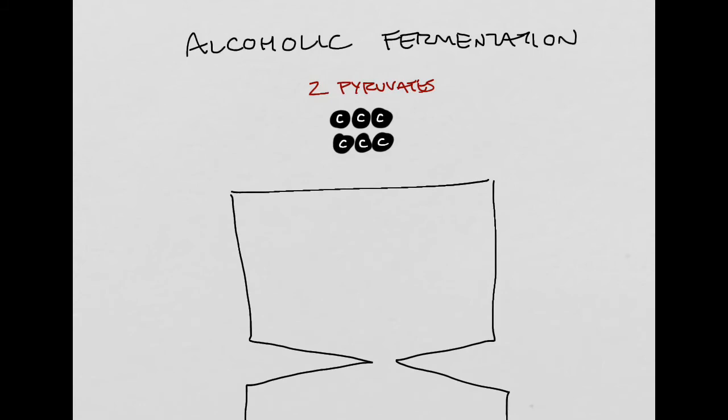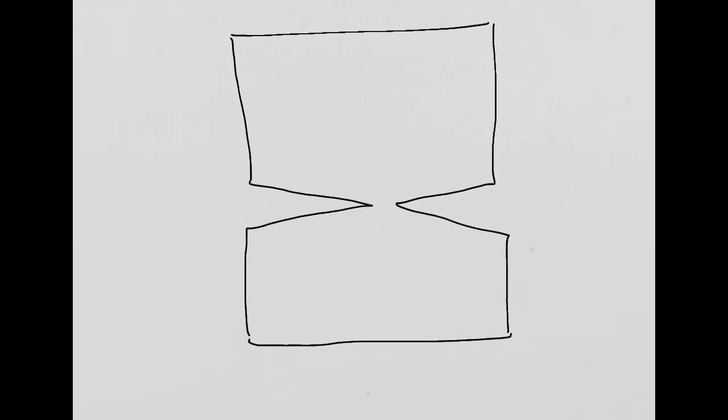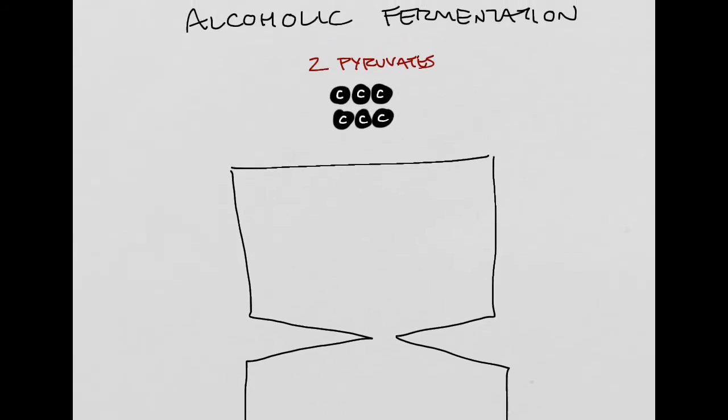We are going to start with our same two pyruvates that came out of glycolysis. Again, you don't do lactate fermentation and alcoholic fermentation. Depending on what kind of organism you are, you're going to do one or the other. So this would have to be in a completely different organism undergoing alcoholic fermentation. So, we have our pyruvates, and we're going to go ahead and make another one of these fermentation boxes, but this is going to look a little different. This looks different because it has sort of an hourglass shape to it, since there are going to be two distinct reactions that occur in the alcoholic fermentation pathway.